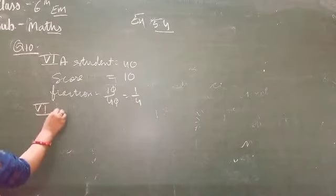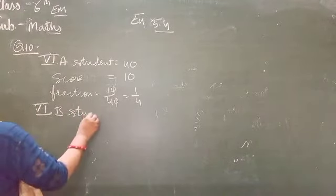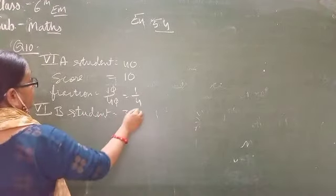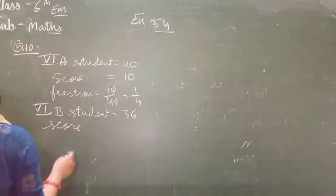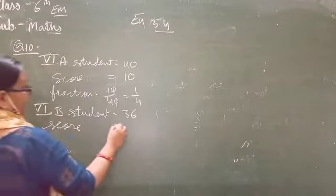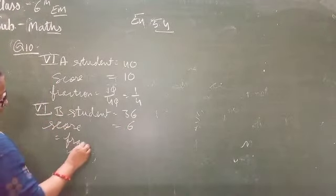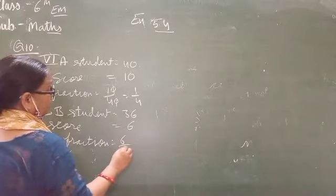Next, for 6B. How many students are there? In 6B there are 36 students. And how many students scored above 90? 6 students. So this is 6 upon 36.